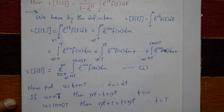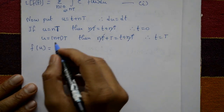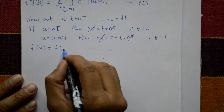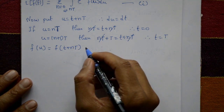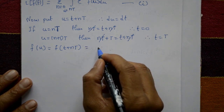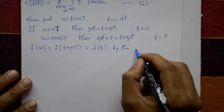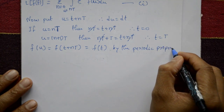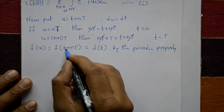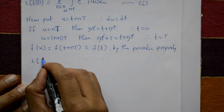We also transform the function f(u): since u = t + nT, we have f(u) = f(t + nT). By the periodic property of f, f(t + nT) equals f(t). So after substitution, f(u) simplifies to f(t), and this is equation number one updated using the periodic property.